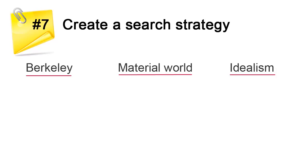To identify your search terms, look at the topic words you underlined when analyzing your topic. Think of any synonyms or related terms for these. For example, material world, materialism, materialist, realism. You may also want to try searching with these terms.